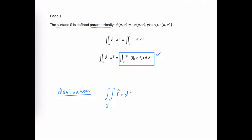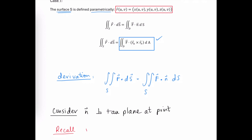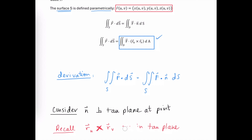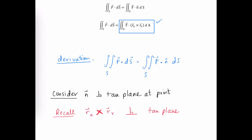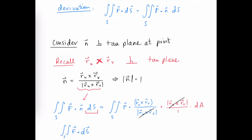The flux integral is evaluated by taking the dot product of the vector function with a vector perpendicular to the surface. If the surface is defined parametrically, the partial of r with respect to u and the partial of r with respect to v are both in the tangent plane, so their cross product gives a vector perpendicular to the tangent plane. Dividing by its own magnitude gives a unit normal vector. Substituting this into the flux integral and replacing dS with the magnitude of that cross product, the magnitudes cancel each other out.